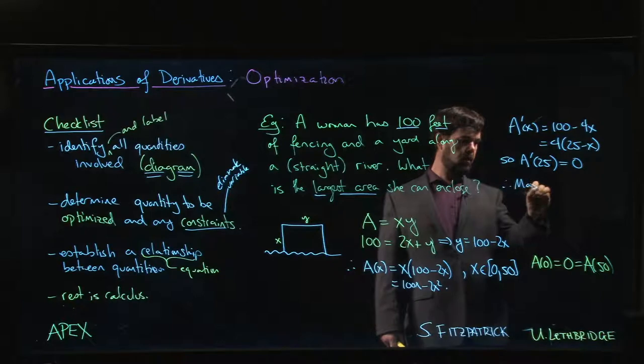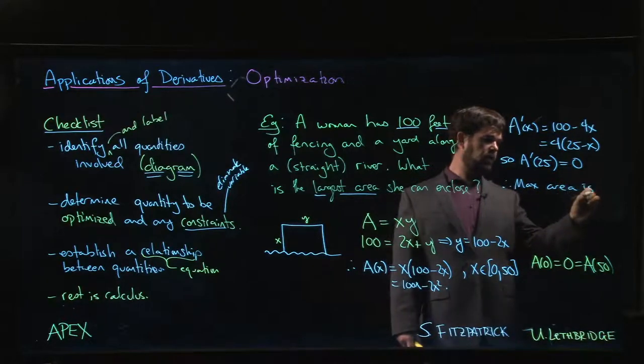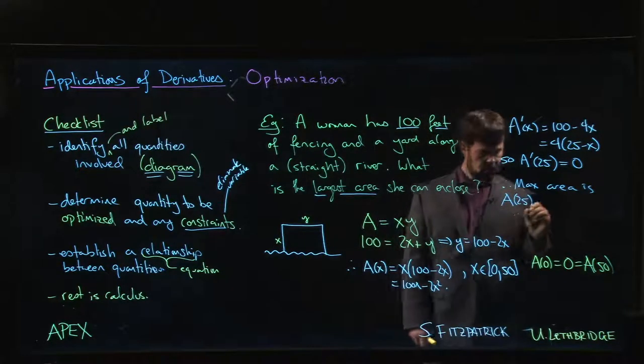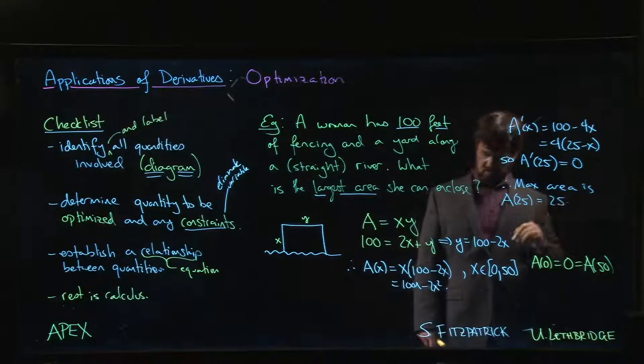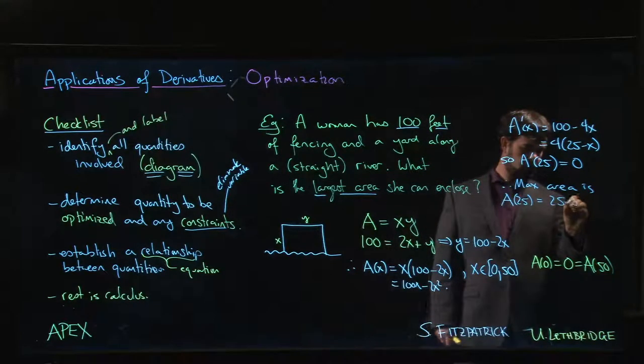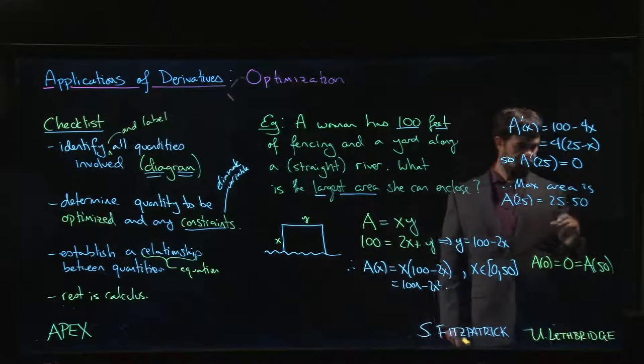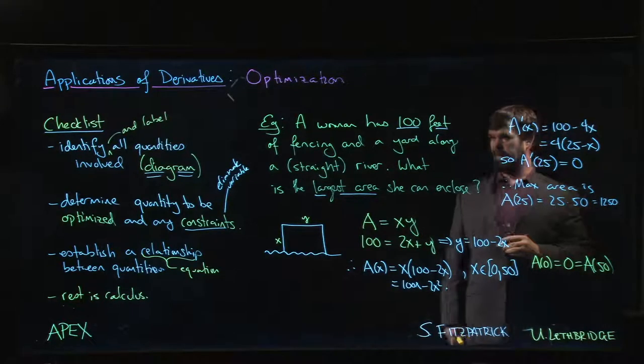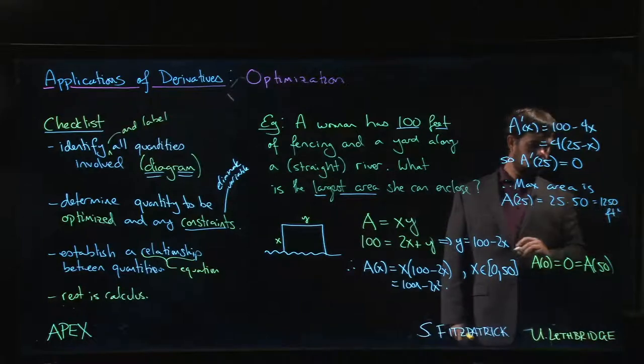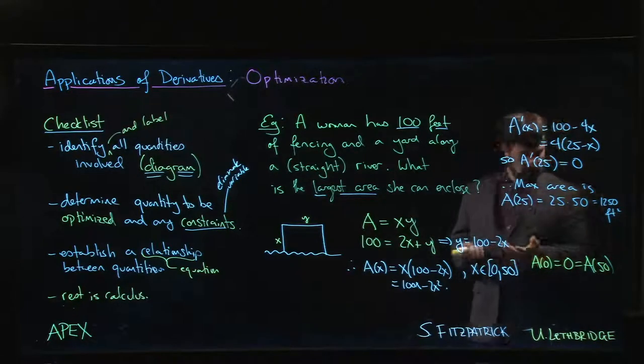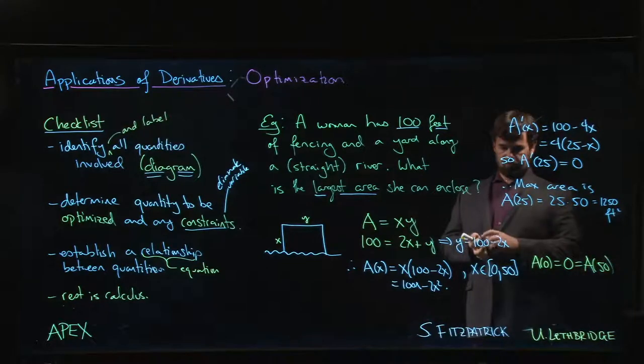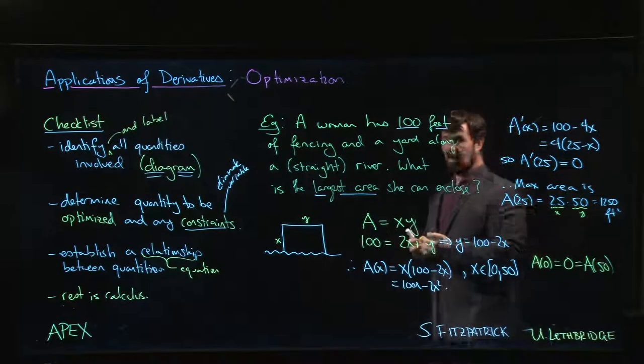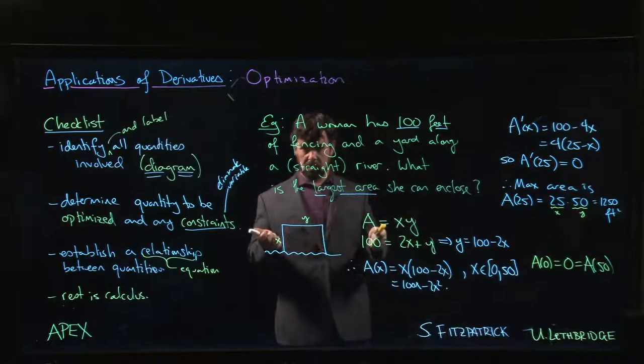Which is 25 times 50, okay, which is going to be 1250, and I guess that's going to be in square feet. So that gives us our answer. It might have asked for the dimensions, but you can see them here. X should be 25, y should be 50. That's what we want for the dimensions of our yard in this case.